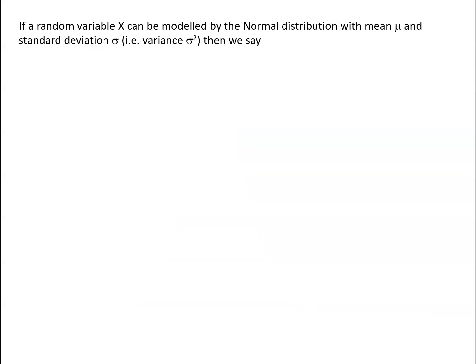So if a random variable x can be modeled by the normal distribution with mean μ and standard deviation σ, or equivalently, variance σ², then we say that x is normally distributed with mean μ and variance σ², and abbreviate that down to saying that x is N(μ, σ²).